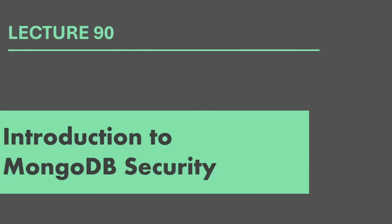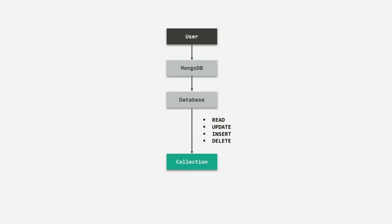Now, why is authentication and authorization required? By default, if we don't have any authentication and authorization in place, any user can access the database in MongoDB server and perform read-write operations on the database collections. So any user who has the connection string of our MongoDB server can connect to the MongoDB databases and perform any action they want — read, update, insert, or delete data from the collection.